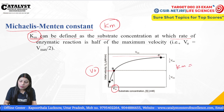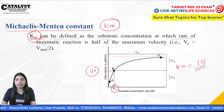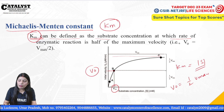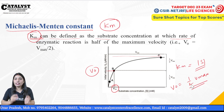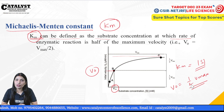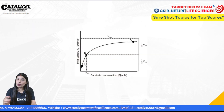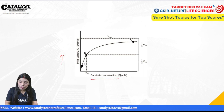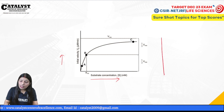Km represents one particular substrate concentration where the velocity is half Vmax, which means 50% enzyme saturation. This is a key concept you will find when you derive the Michaelis-Menten equation or interpret the graph.